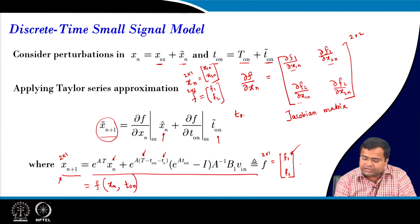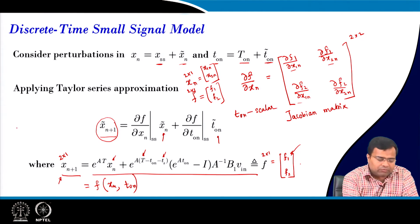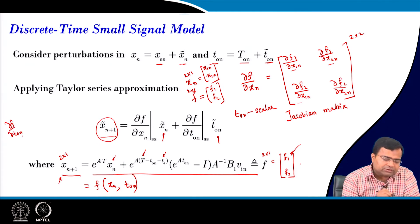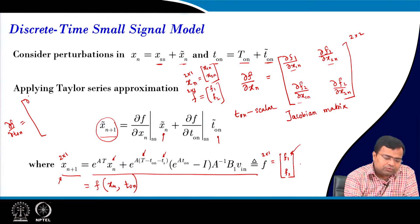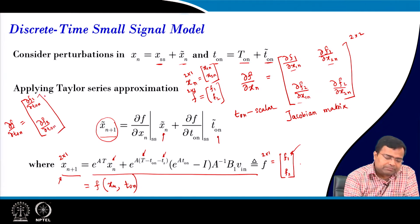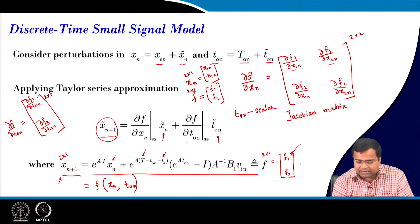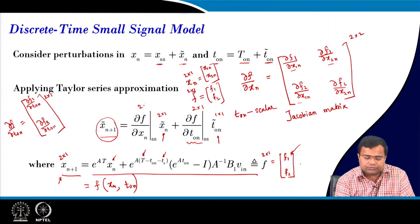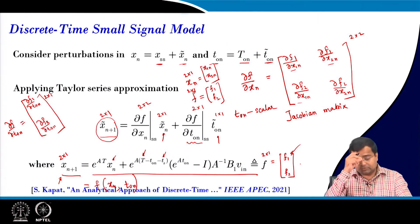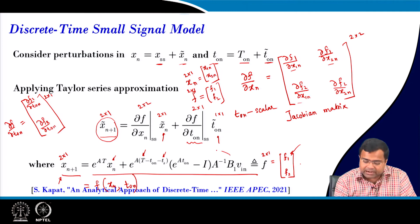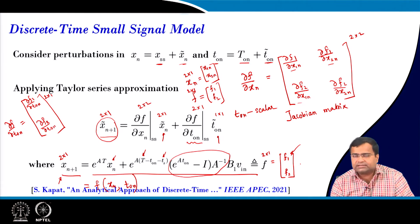What about t_on? t_on is a scalar quantity. Then what will be dou_f/dou_t_on? It will look like [dou_f1/dou_t_on; dou_f2/dou_t_on], which is simply a 2×1 vector, because f is 2×1 and t_on is a scalar. So we get another matrix: one is 2×2 and the other is 2×1, giving overall a 2×1 result. This paper also presents what will happen if the matrix is non-invertible and how to deal with it.